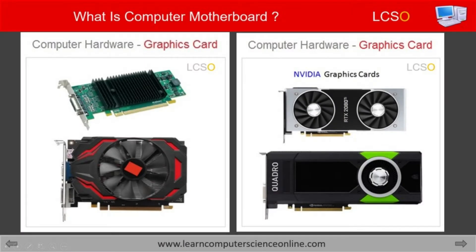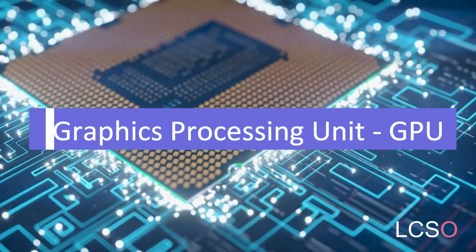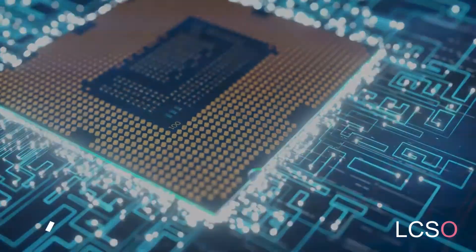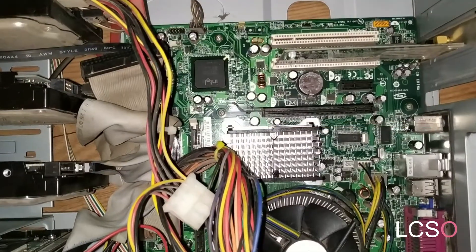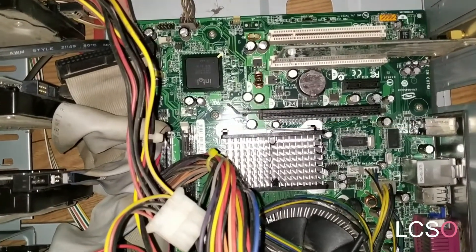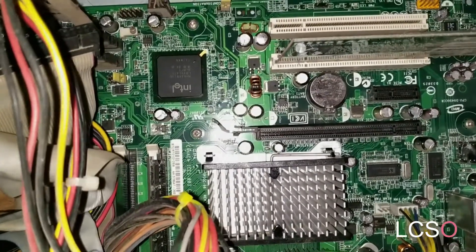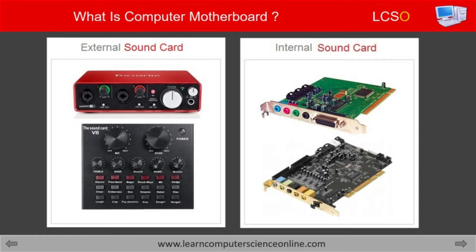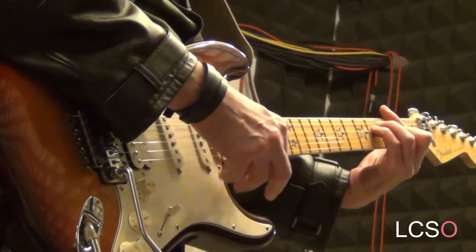For example, a graphics card is used to provide additional computing power to the computer to enhance its graphics processing capability. Graphics card is installed into the motherboard expansion slots and is a must-have add-on card for all high-end computers used for graphics processing work and demanding video games. Similarly, a sound card can also be added to the computer. The sound card is used to add additional audio processing functionality and is very useful for a musician who wants to use the computer for professional work.